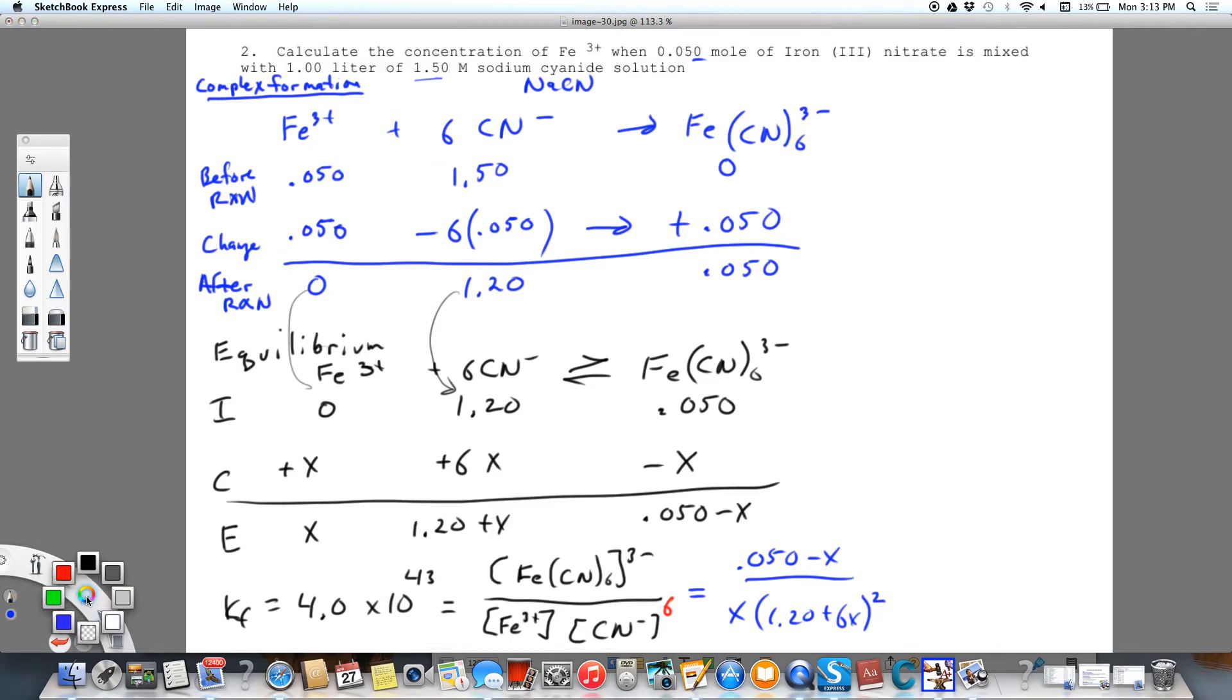We're going to neglect X because it's very, very small, which is another reason why we want to start off with 0 for iron. We wouldn't want our complex to be our X because it's very large. We don't want a large X for many reasons. So we're going to neglect both of those. And then our X turns out to be 4 times 10 to the minus 46. So obviously, X is going to be very, very small. And that's why we set the math up this way.